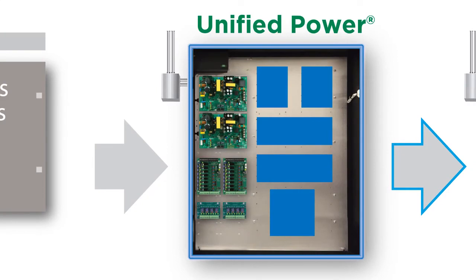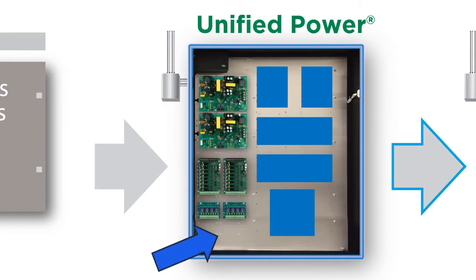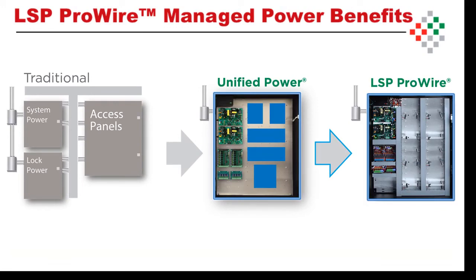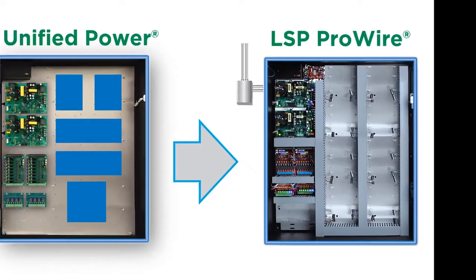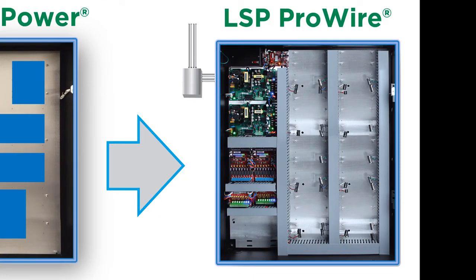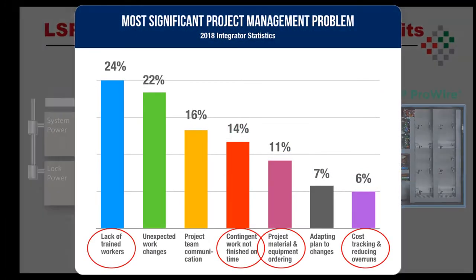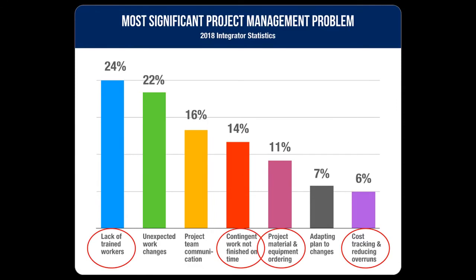The Unified line consists of a single enclosure populated with all necessary LSP boards for the system, and a backplate pre-set up with mounting hardware in place ready for the access control boards and access wiring. All LSP boards in the enclosure are pre-wired at the factory. The ProWire takes Unified to the next step by including all necessary wiring for the access control boards pre-wired into the enclosure with plug-in terminal strips. The only remaining wiring necessary at the site is the field wiring.